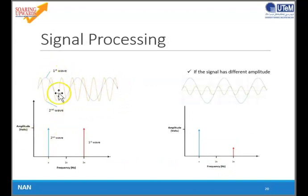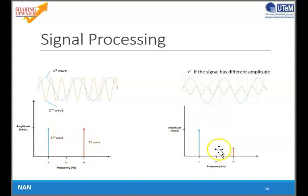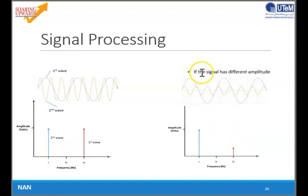For example, in the time domain there are two signals. When we deconstruct using FFT, we get the first wave and the second wave. The magnitude of the second wave is smaller than the first wave, which is why we can get this frequency domain graph.